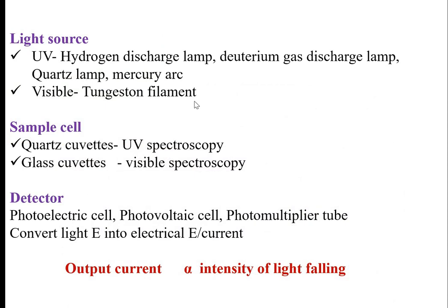For the UV light source, we can use hydrogen discharge lamp, deuterium gas discharge lamp, quartz, and mercury. For visible light, a tungsten filament lamp is used. For the sample cell, a quartz cuvette is used especially for UV spectroscopy, while a glass cuvette can be used for visible spectroscopy. Detectors include photomultiplier cell, photovoltaic cell, and photomultiplier tubes. The detector converts light energy into electrical energy or current, and the output current is proportional to the intensity of the light.